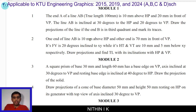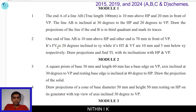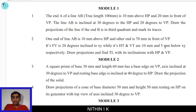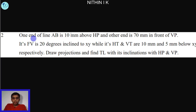One end of a line AB is 10mm above HP and the other end is 70mm in front of VP. Its front view is 20 degrees inclined to the XY line, while its HT and VT are 10mm and 5mm below XY respectively. Draw projections and find true length with its inclination with HP and VP. End A is 10mm above XY line, end B is 70mm in front of VP, so B-dash is 70mm below XY line.